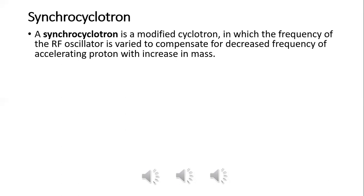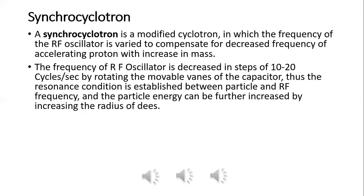The cyclotron frequency varies because of mass increase. The frequency of the oscillator is decreased in steps of 10 to 20 cycles per second by rotating the movable vanes of the capacitor. The capacitor adjusts the frequency, establishing the resonance condition so that particle energy can be further increased.